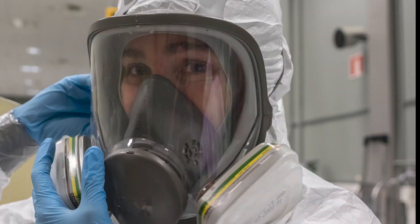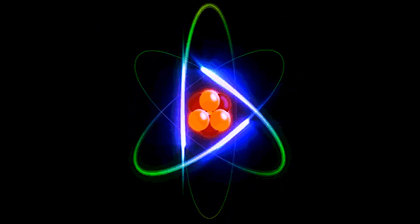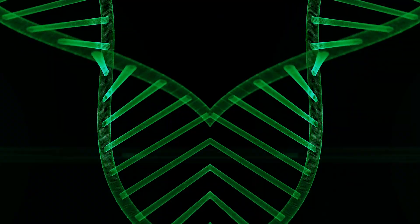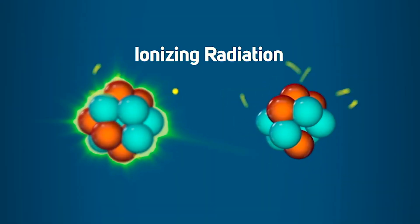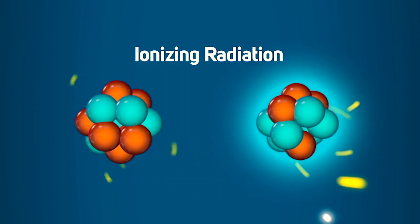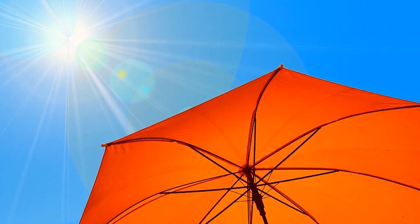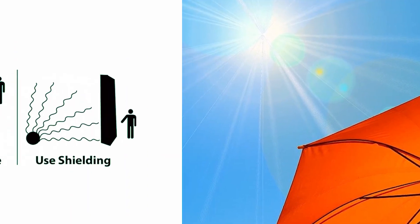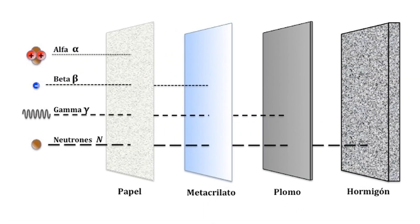Lo primero es la seguridad. Nosotros estamos hechos de átomos, y ciertas radiaciones pueden romper enlaces generando radicales libres que dañan nuestro ADN. A este tipo de radiación se le conoce como radiación ionizante. Los iones, que son partículas que aceleramos, son un tipo de radiación ionizante, y al igual que los rayos X de las radiografías o la luz ultravioleta que recibimos del Sol, requieren de protección especial, como limitar el tiempo de exposición o utilizar un blindaje apropiado. Con cada tipo de radiación nos protegemos de forma diferente.